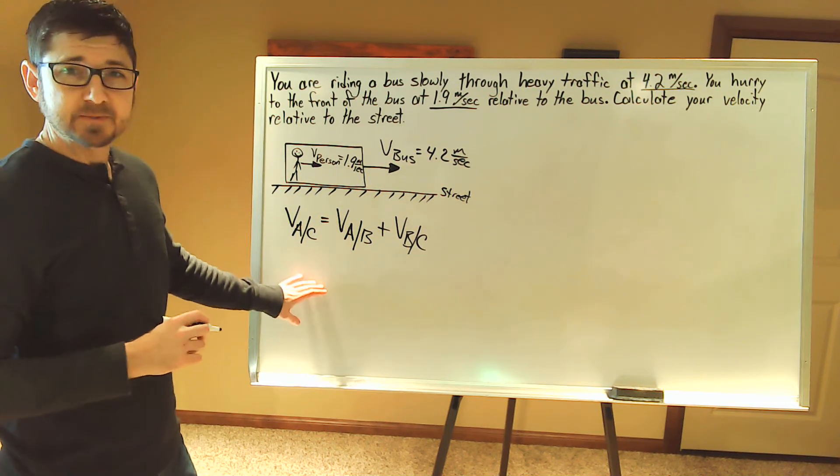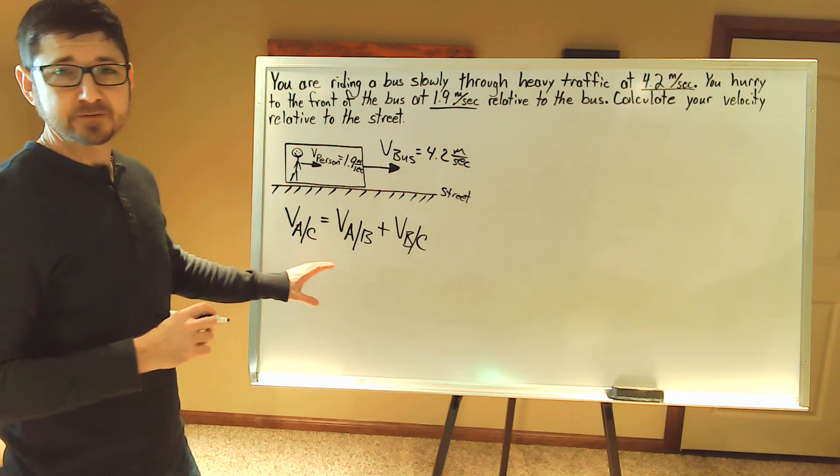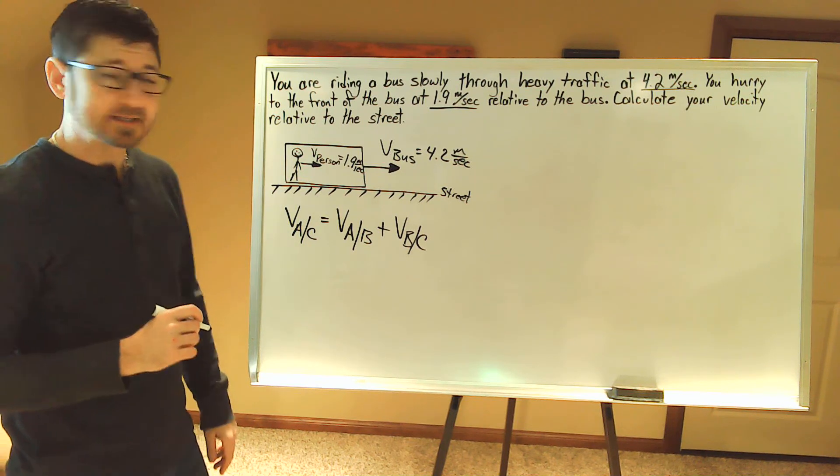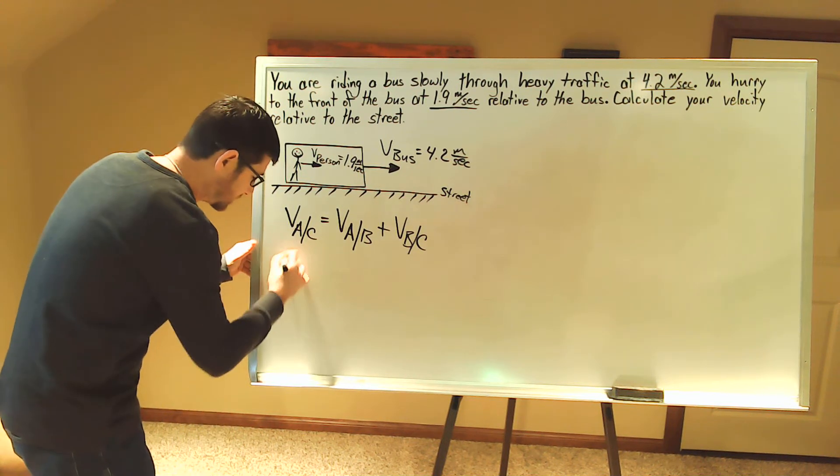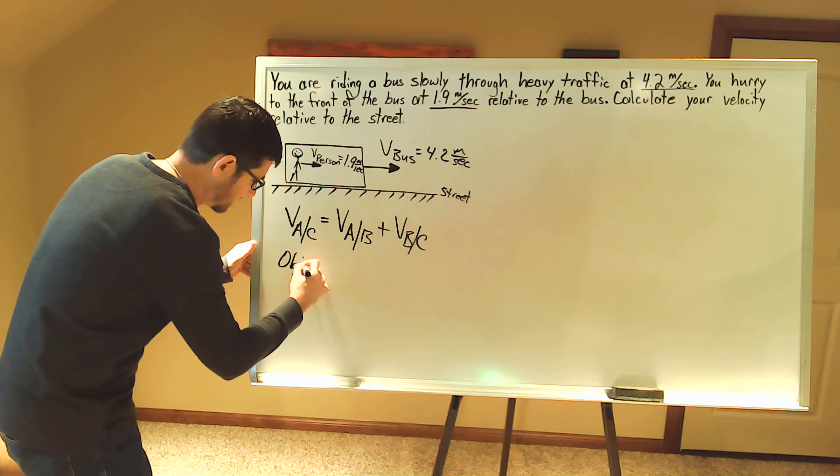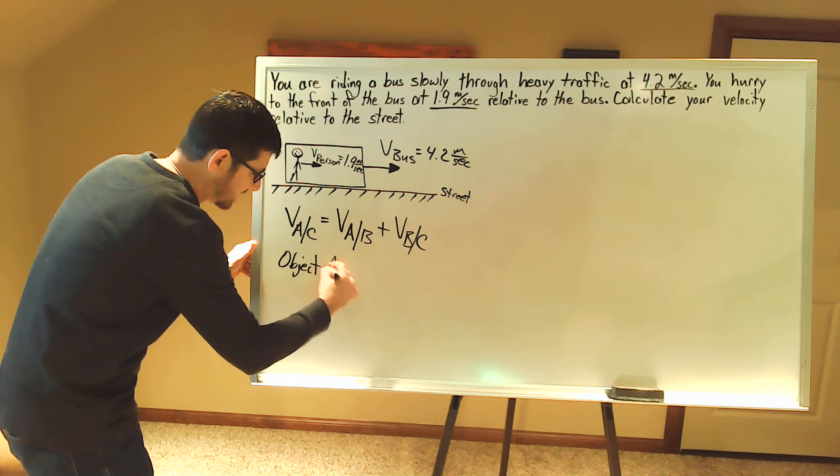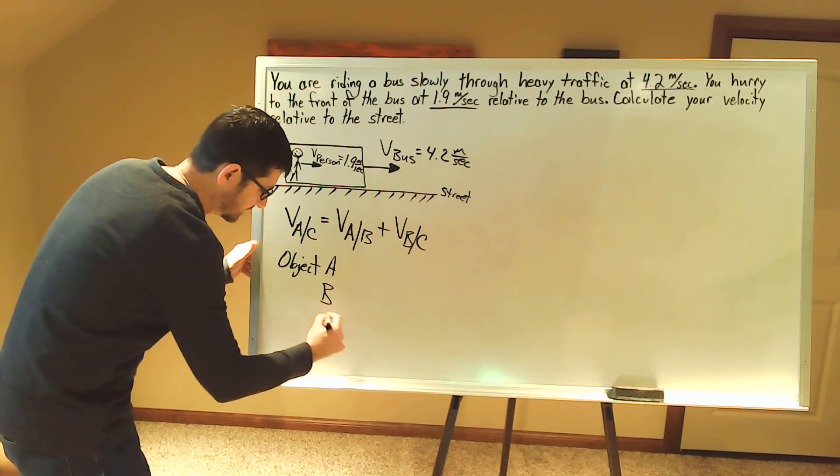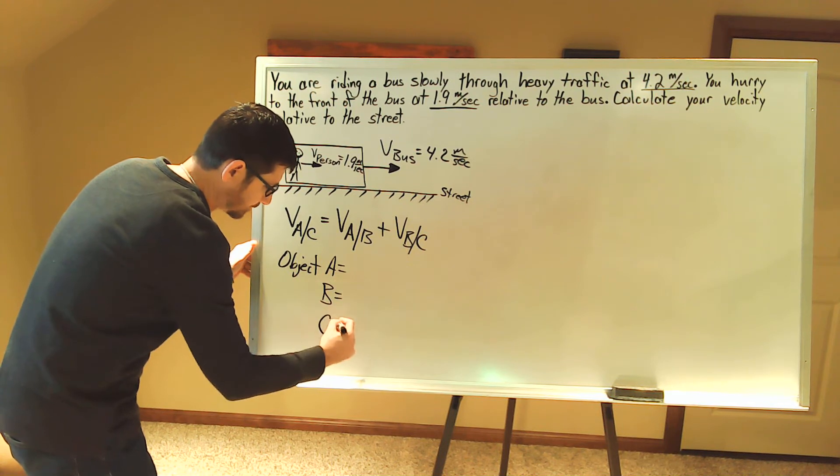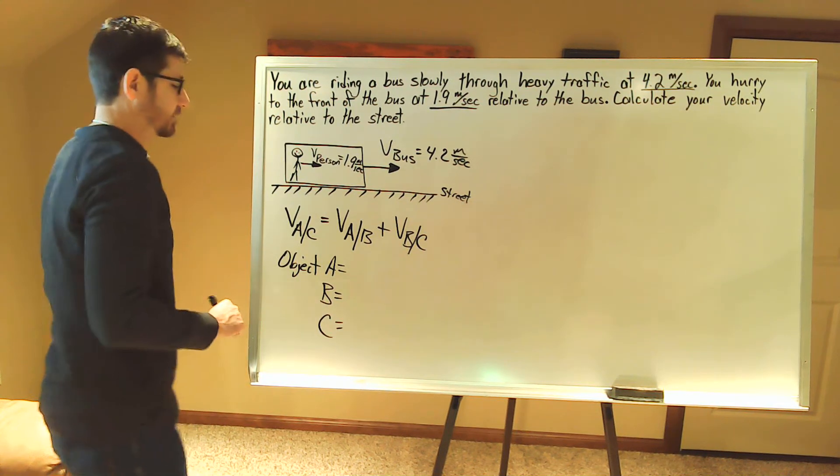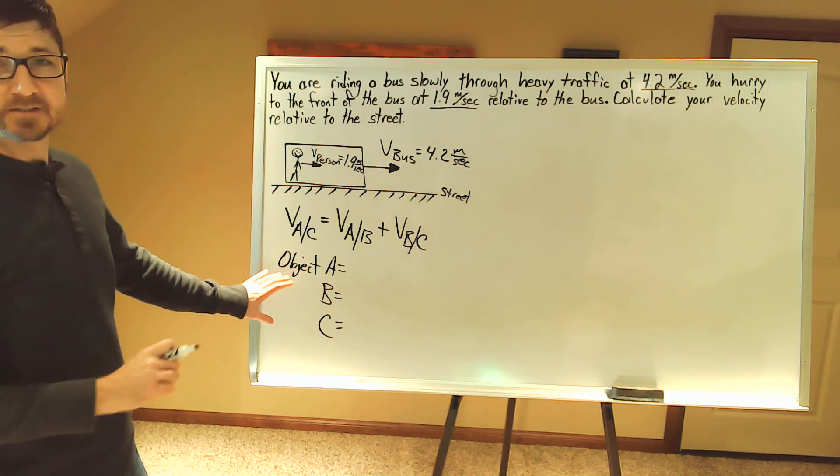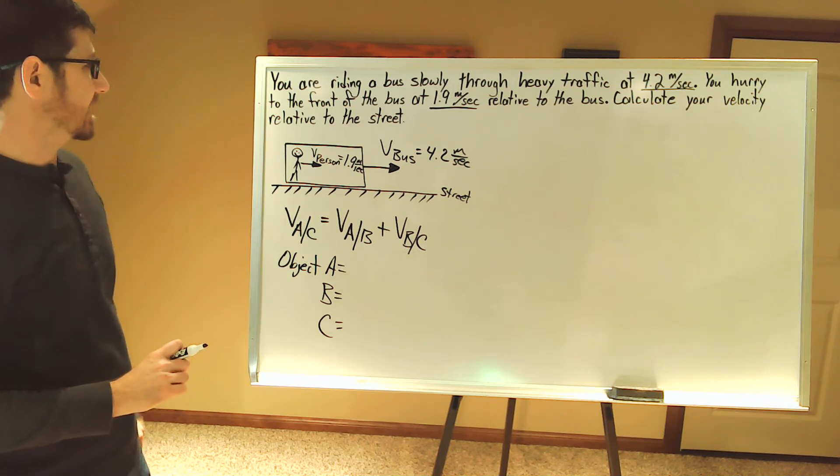Now, the third step is we want to identify what objects A, B, and C are. So let's go ahead and write this down. So we have object A, B, and C.